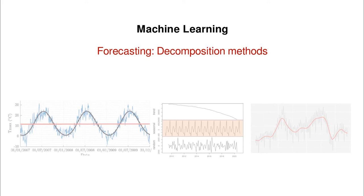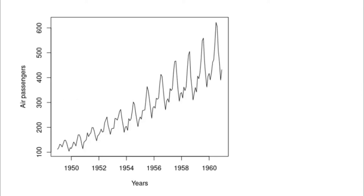In the last video we covered very simple methods like the naive method or the random walk approximation with drift, and today we're going to discuss some more advanced methods that try to catch the trend, the seasonality, and the rest of the series.